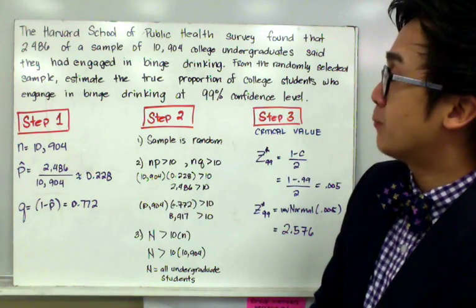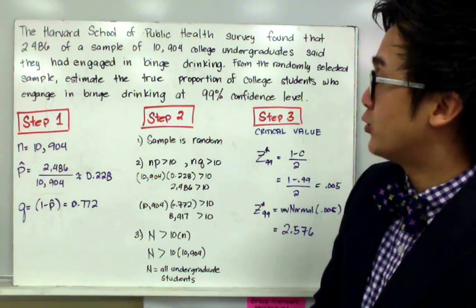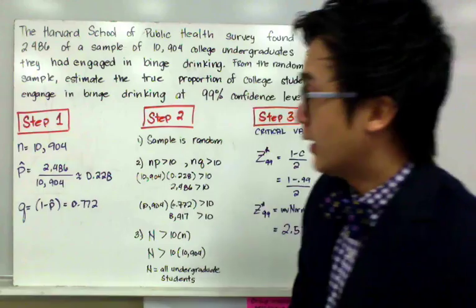From the randomly selected sample, estimate the true proportion of college students who engage in binge drinking at 99% confidence level.